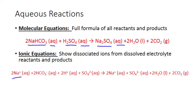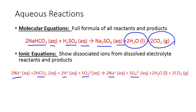Sodium bicarbonate breaks apart into sodium and bicarbonate ions. Sulfuric acid breaks into hydrogen and sulfate ions. And sodium sulfate breaks into sodium and sulfate ions. The remaining two products in this reaction are water and carbon dioxide — molecular substances that do not break apart into ions. They're pure liquid and pure gas, so we keep them in molecular formula form in our final ionic equation.